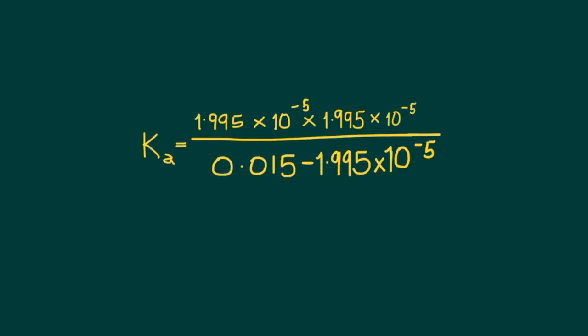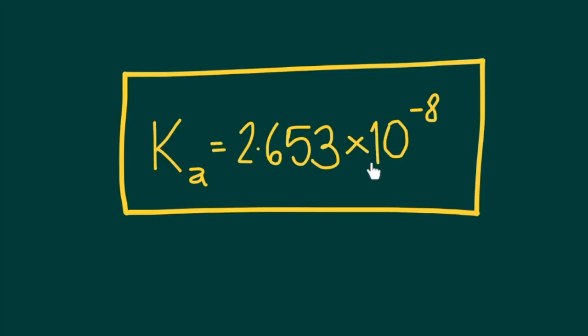This value at equilibrium comes from the initial concentration minus the change, but remember that we noted that this change is quite negligible when compared to this value. When compared to the uncertainty associated with Ka, it is acceptable to exclude this from the calculation. If we decide to make an approximation and eliminate this from the calculation because of its negligible value, then the value for Ka comes to 2.653 by 10 to the negative 8. We should note that this is based on an approximation and that Ka has no unit.